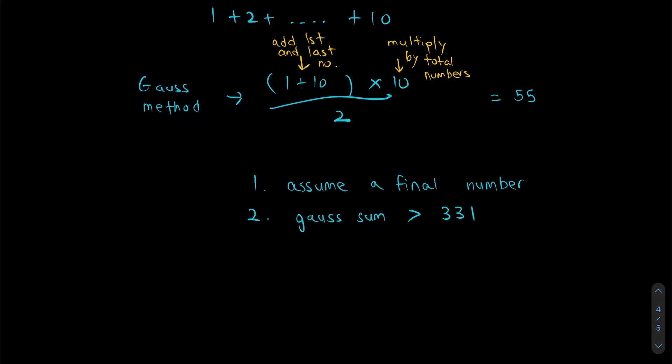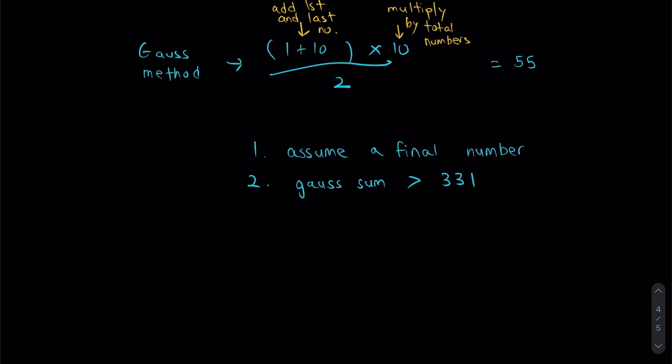So I'm just going to assume a random number. Let's say I assume that my final number is 25. In that case, the Gauss sum of that would be (1 plus 25) in the bracket times 25 because there's 25 numbers in total divided by 2. And if I were to work that out, I would get 325. That's my answer. Now, 325.